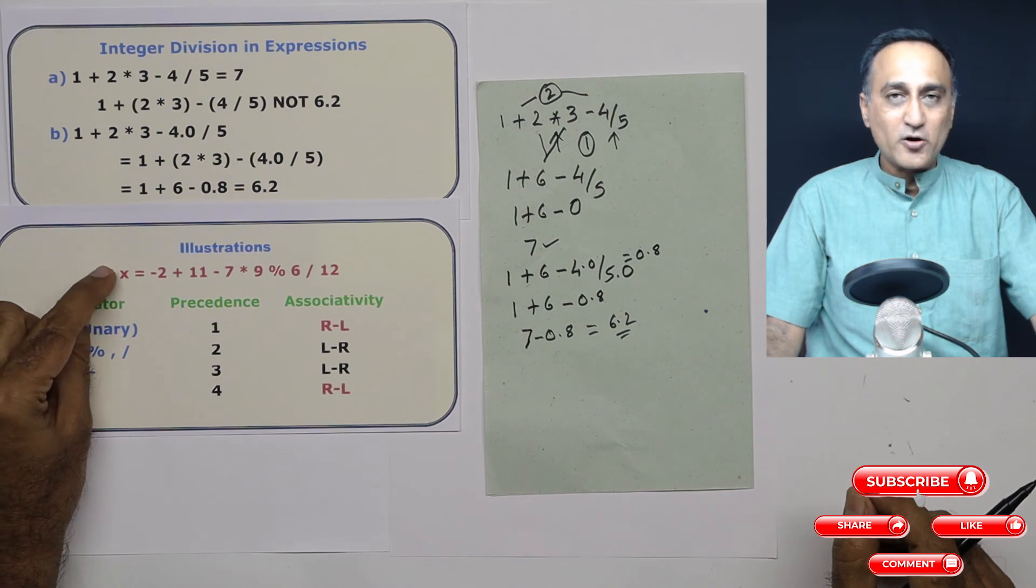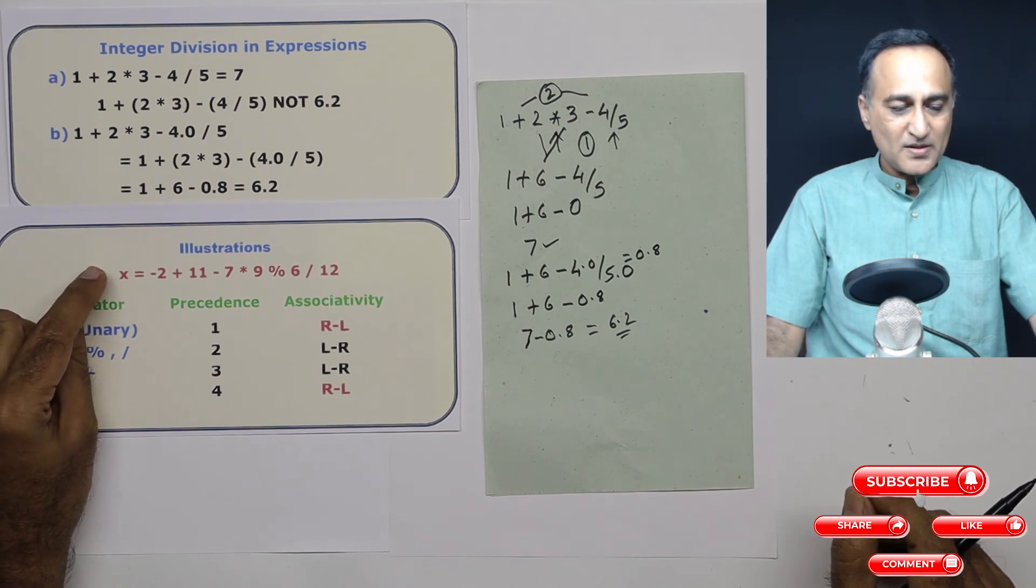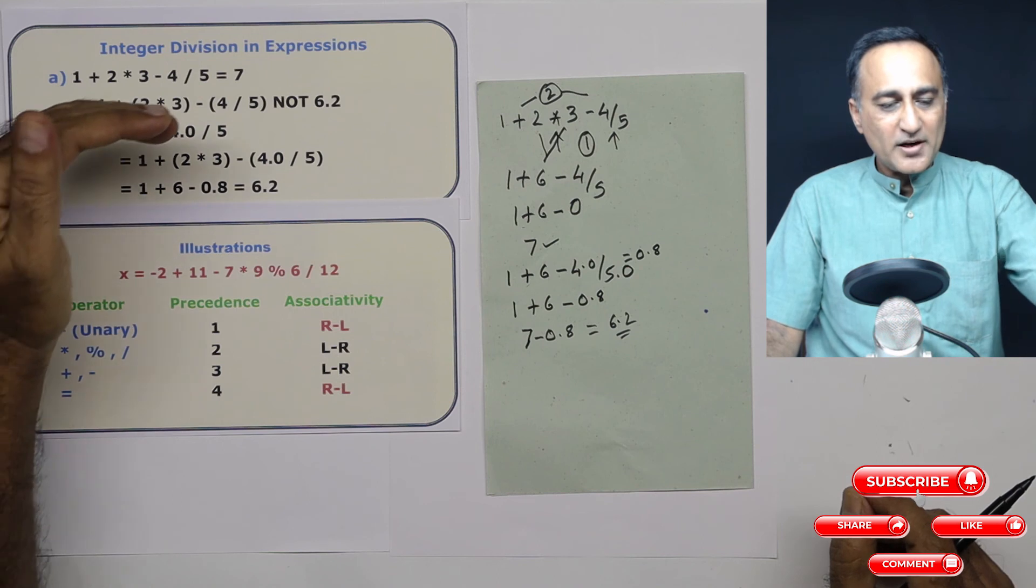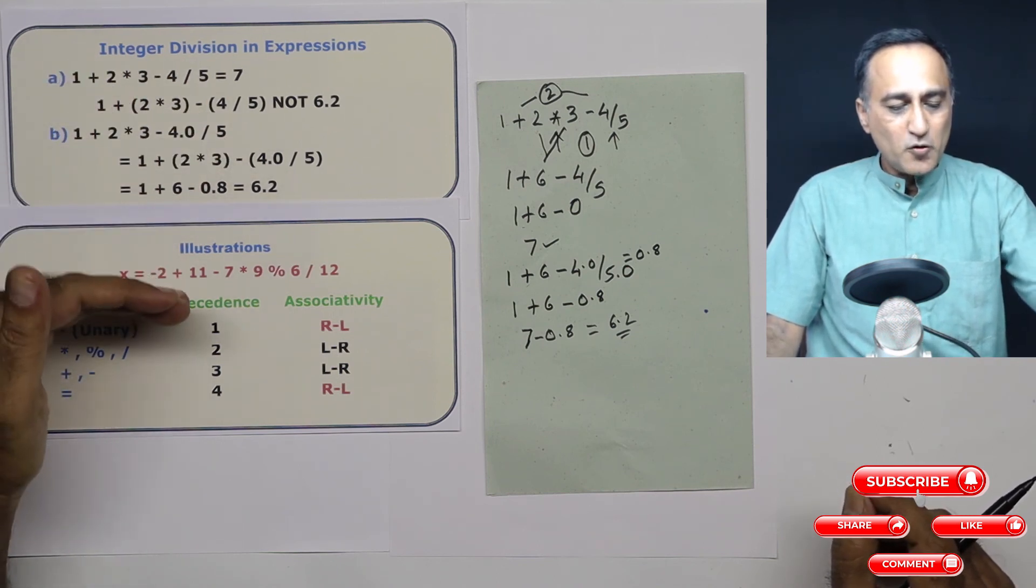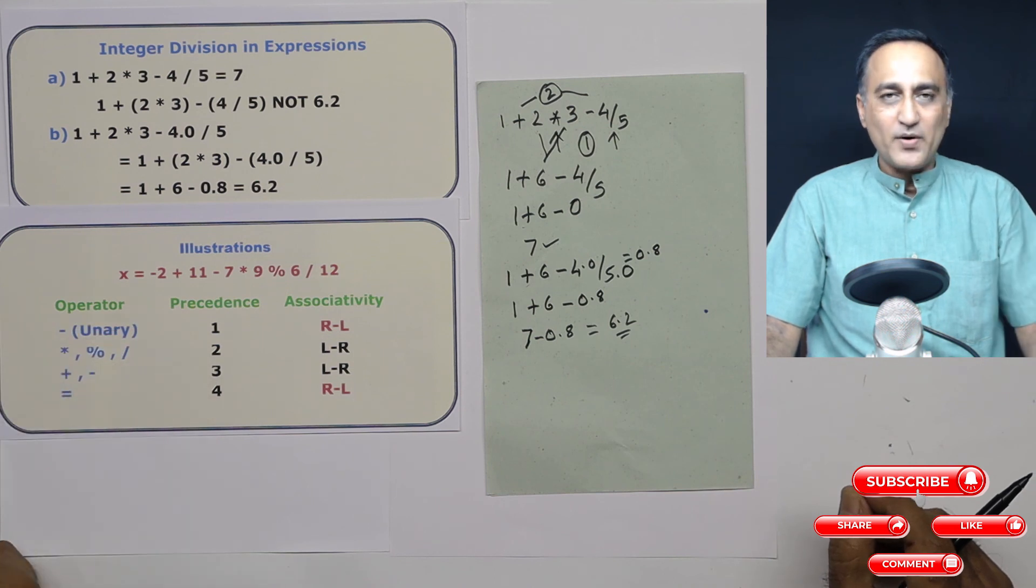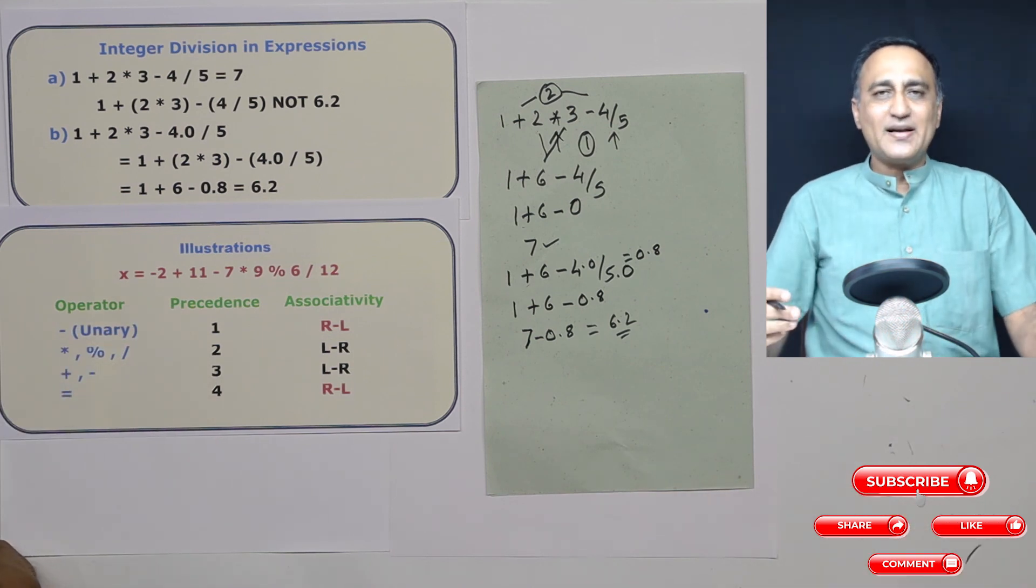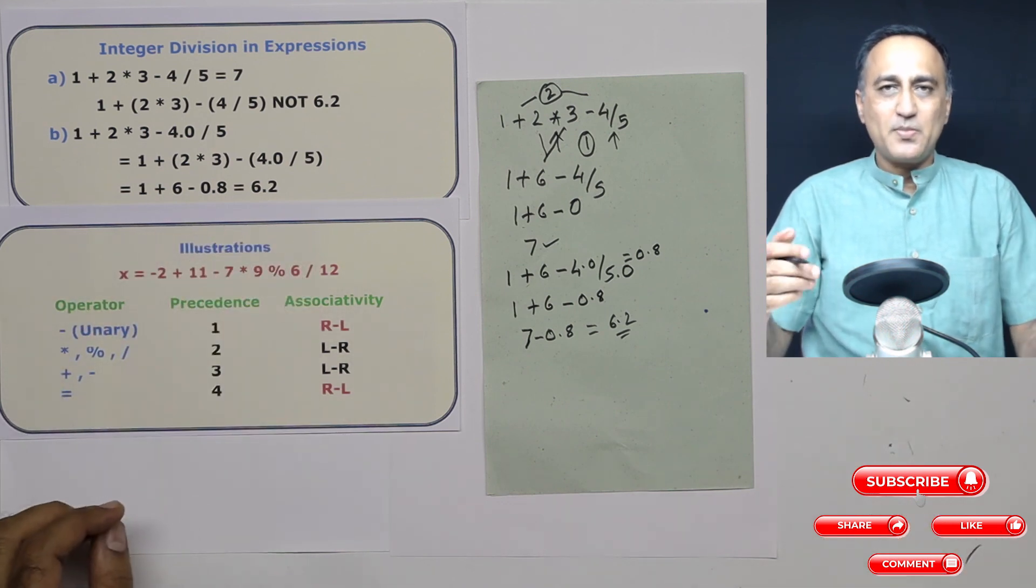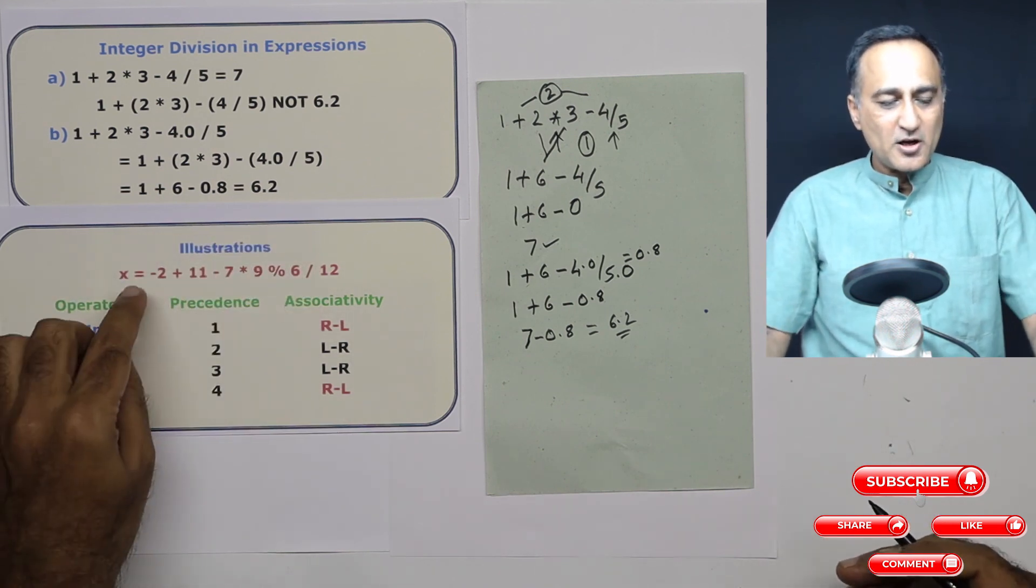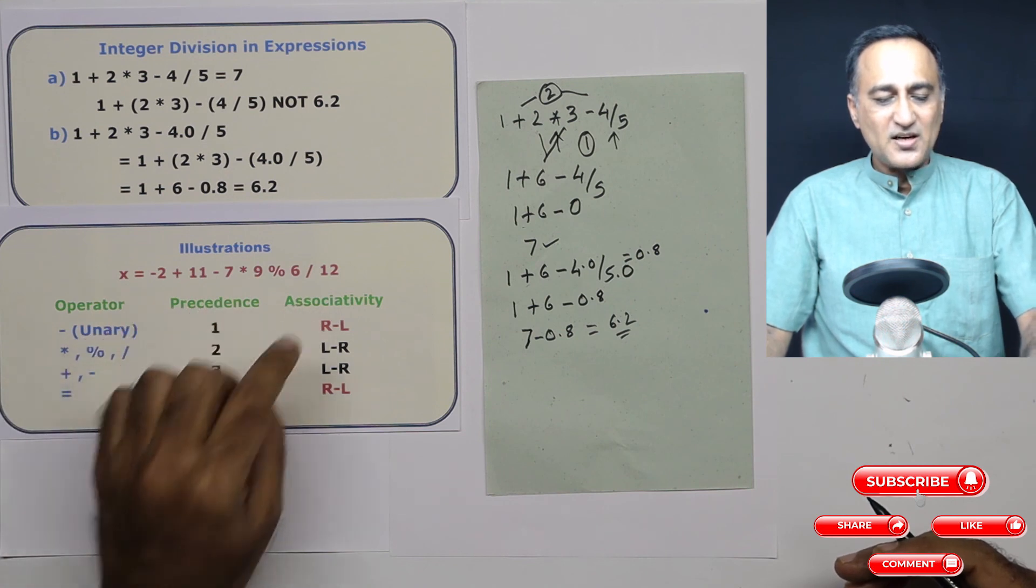So this session gives you an idea about integer division, real number division, as well as told you how the operators get evaluated. We will be trying to solve at least two to three examples involving expressions step by step to give you a much better idea about understanding precedence and associativity.